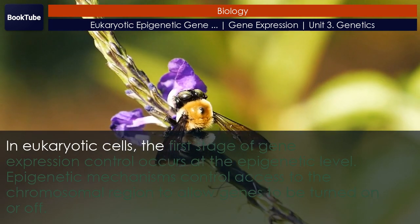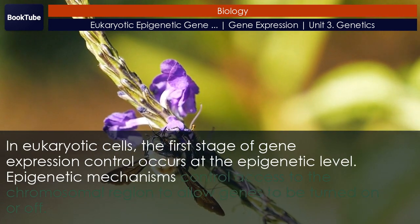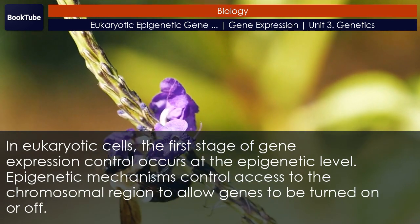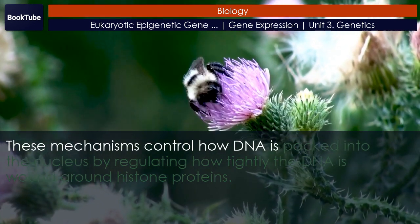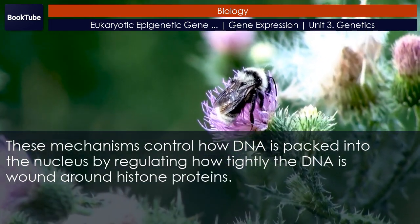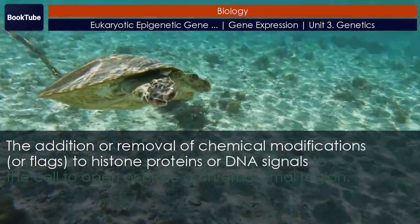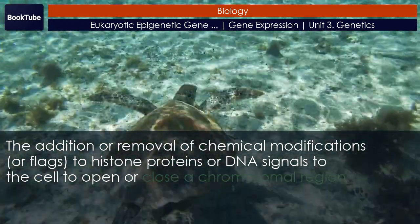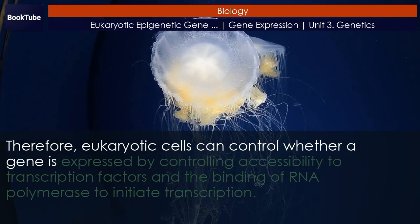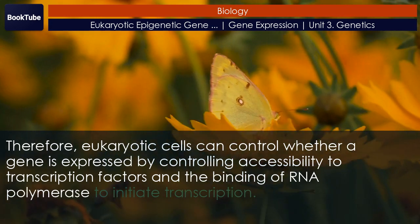In eukaryotic cells, the first stage of gene expression control occurs at the epigenetic level. Epigenetic mechanisms control access to the chromosomal region to allow genes to be turned on or off. These mechanisms control how DNA is packed into the nucleus by regulating how tightly the DNA is wound around histone proteins. The addition or removal of chemical modifications or tags to histone proteins or DNA signals to the cell to open or close a chromosomal region. Therefore, eukaryotic cells can control whether a gene is expressed by controlling accessibility to transcription factors and the binding of RNA polymerase to initiate transcription.